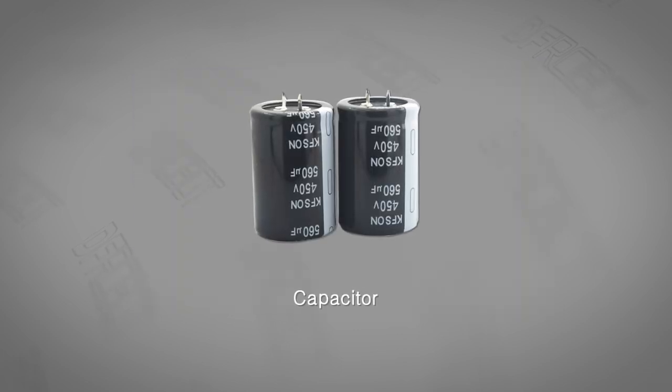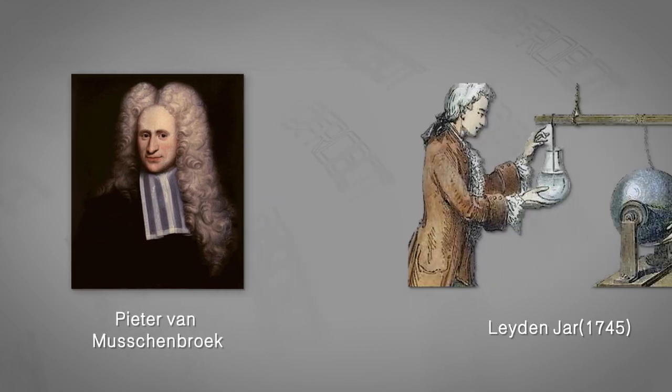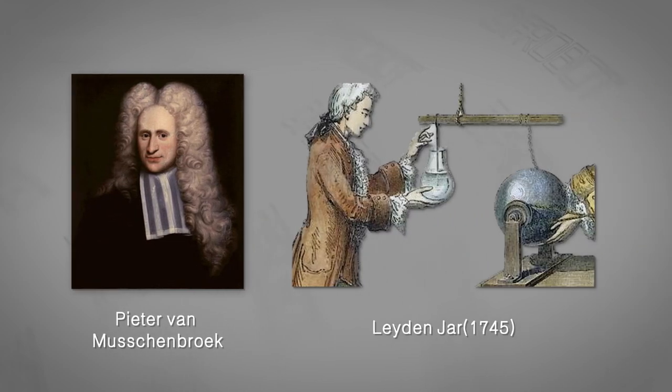So what is a capacitor? In 1745, Peter van Mussenbroek, a professor from Leiden University in Holland, invented the Leiden Jar, which is the original form of capacitor. It is the first device that could store large amounts of electric charge.